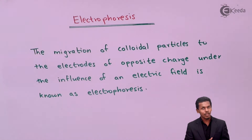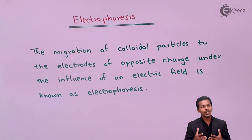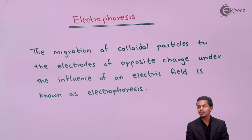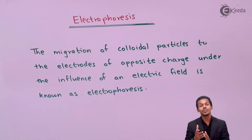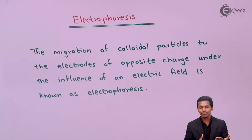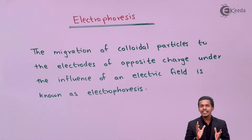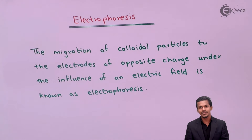Now let me talk about the phenomenon — how does it arise? Suppose we have two electrodes: one is a negative charge electrode and one is a positive charge electrode. Talking about the colloidal phase as well as the colloidal medium, there will be both positive and negative charges. The dispersed phase and dispersed medium each carry charge.